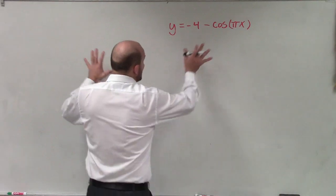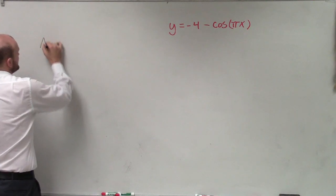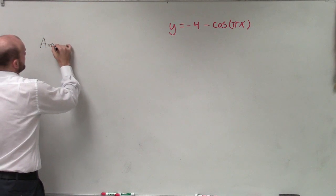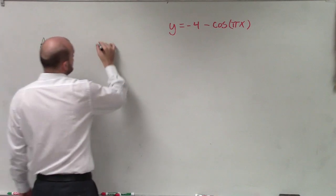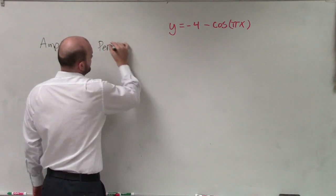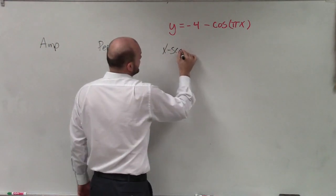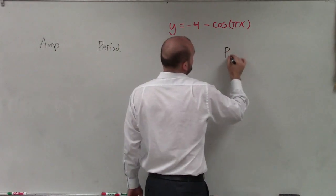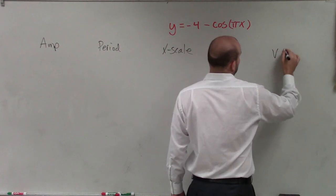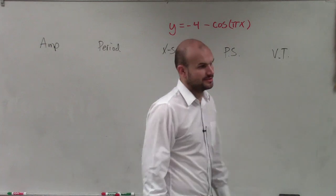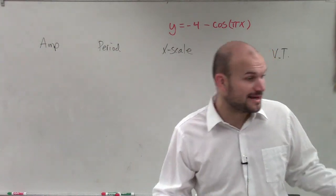So when we have a problem like this, there are five things that we're going to be looking for: the amplitude, the period, the x scale, the phase shift, and the vertical transformation. That's all the information you need.